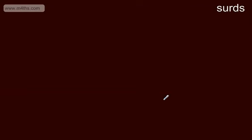In this video, we're going to look at surds. A surd is an irrational number. Irrational numbers are non-terminating, non-recurring decimals. An example of an irrational number could be pi. Pi is 3.14159 and so on and so forth. It doesn't stop and its pattern doesn't repeat. These numbers cannot be written in the form A over B, where A and B are integers.